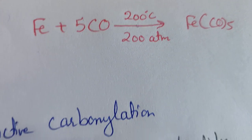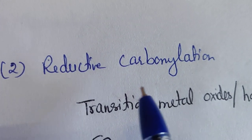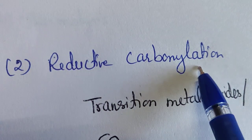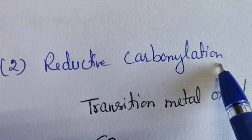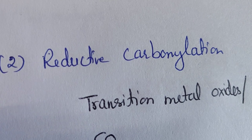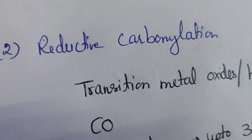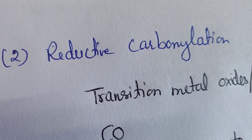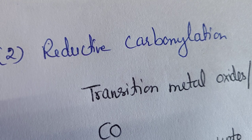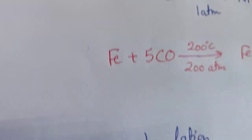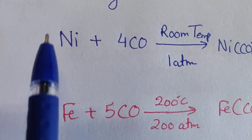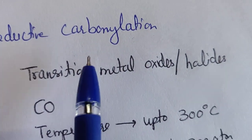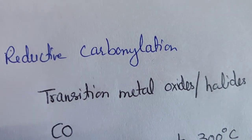The second method is reductive carbonylation. Unlike the first method where iron and nickel are already in the reduced metallic form, here we start with transition metal oxides and halides, which must be reduced during the process.